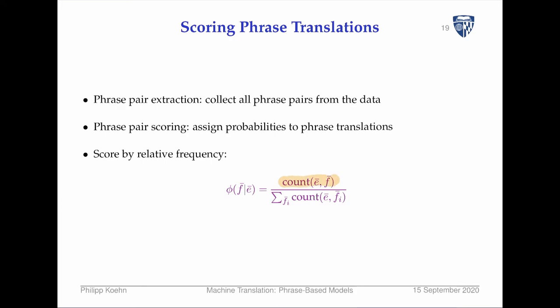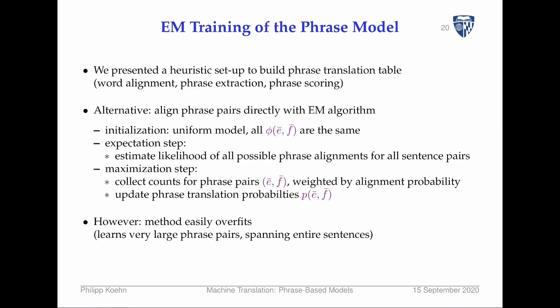How do we score them? We do maximum likelihood estimation — we score by relative frequency. Given a count of a foreign phrase and an English phrase translating into that foreign phrase, we look at all the other ways this English phrase can be translated. That total gives us a probability distribution, which we call φ for phrase.